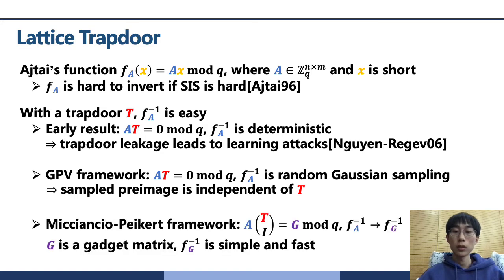Later, Micciancio-Peikert framework proposed a new structure, and T is no longer the lattice basis. With the help of T, the problem of inverting a random function fA is transformed to the problem of inverting the same type of function fG, but for a specific, carefully designed gadget matrix G, with automated much simpler and faster inverting algorithms. Currently, this is a state-of-the-art lattice trapdoor framework.